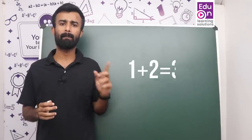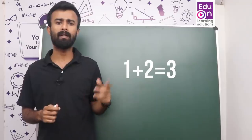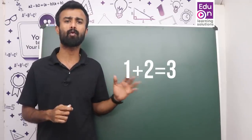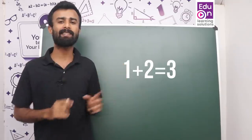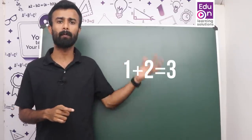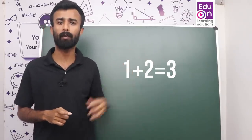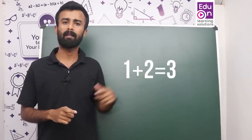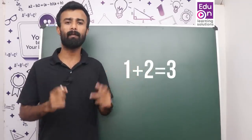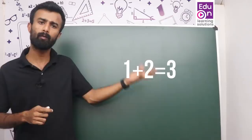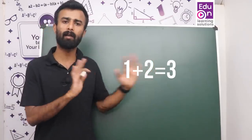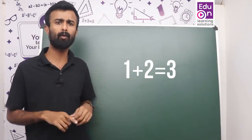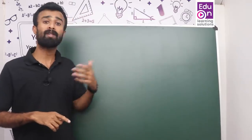1 plus 2. 1 plus 2 is equal to 3. This is the sum of equations. The sum is equal to 2. 1 plus 2 is equal to 3. 2 plus 3 is equal to 5.